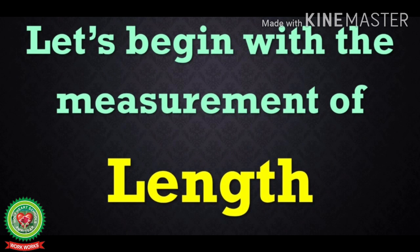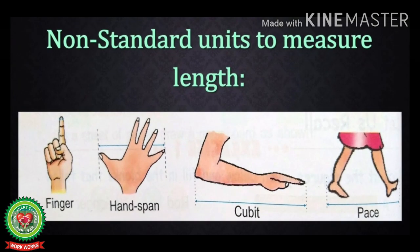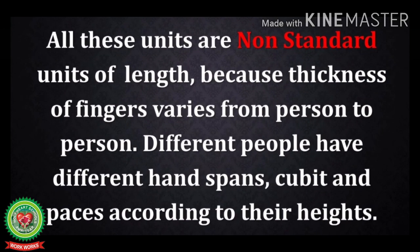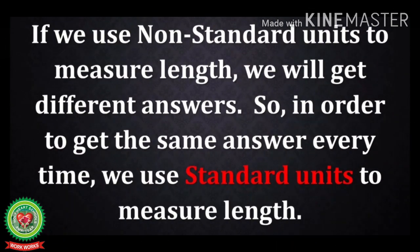Now let's begin with the measurement of length. Sometimes we measure various things with our finger, hand span, cubit, or pace, as shown in the given figure. These are the non-standard units of measurement. They are non-standard because the thickness of fingers varies from person to person — different people have different hand spans, cubits, and paces according to their heights. So if we use non-standard units we will get different answers. In order to get the same answer every time, we use standard units to measure length.